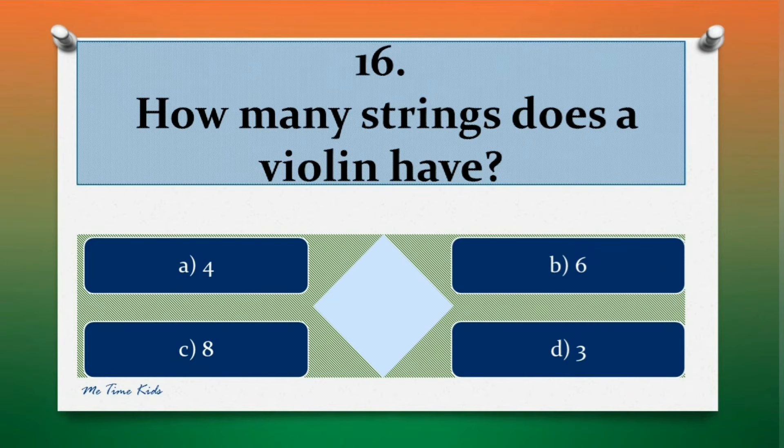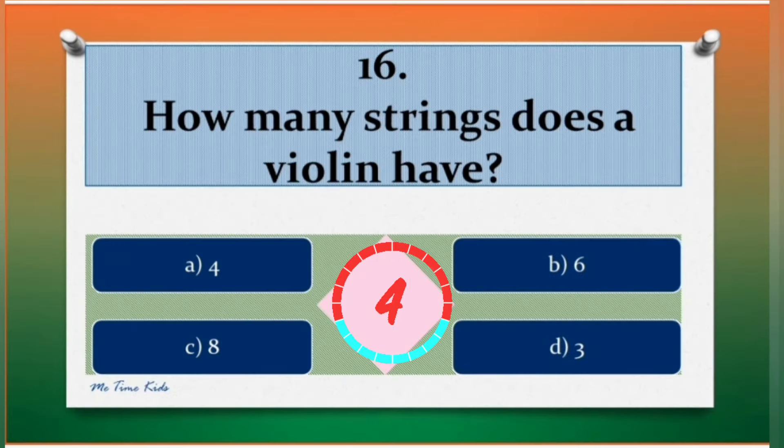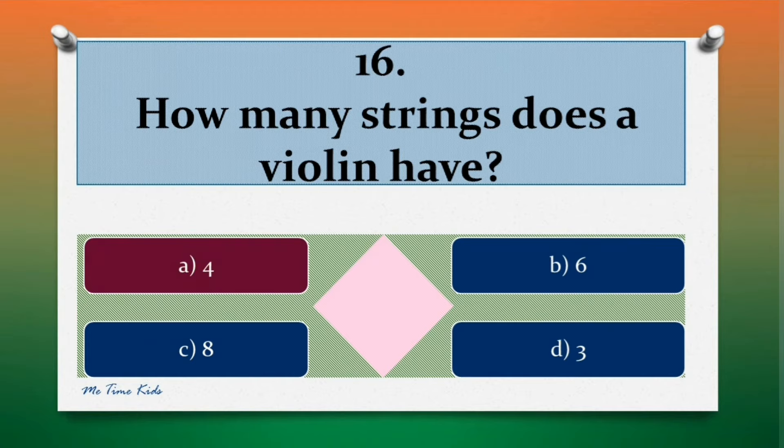Question 16. How many strings does a violin have? Options are: a. 4, b. 6, c. 8, d. 3. Correct answer is a. 4.